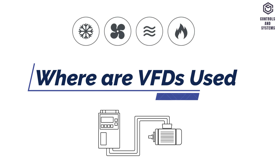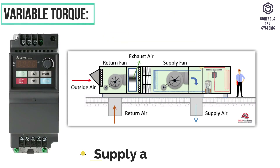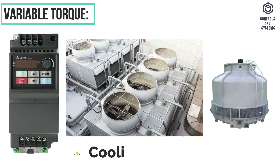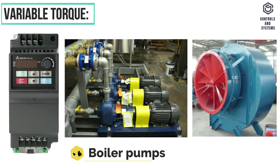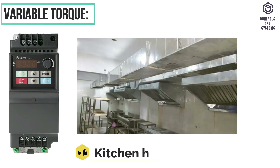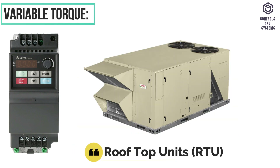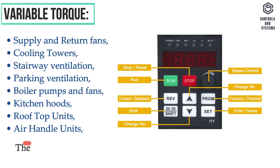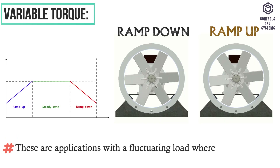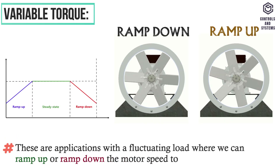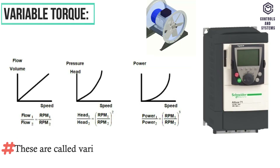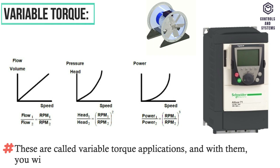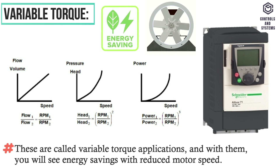Where are VFDs used? Variable torque applications include supply and return fans, cooling towers, stairway and parking ventilation, boiler pumps and fans, kitchen hoods, rooftop units, air handlers, and more. These are applications with a fluctuating load where we can ramp up or ramp down the motor speed to meet the load. These are called variable torque applications, and with them you will see energy savings with reduced motor speed.